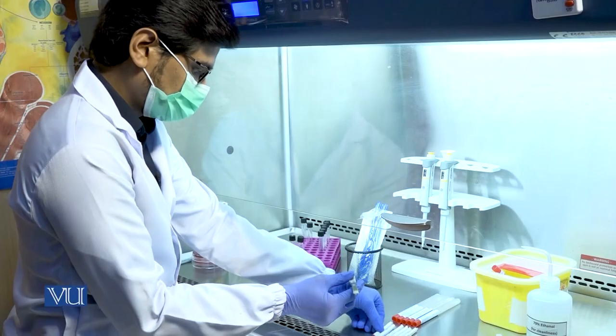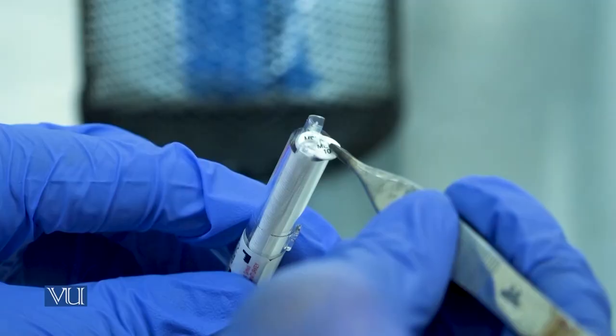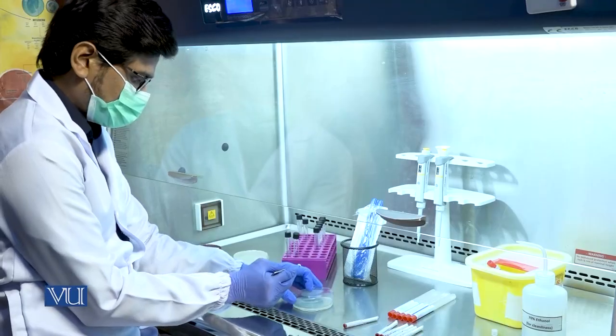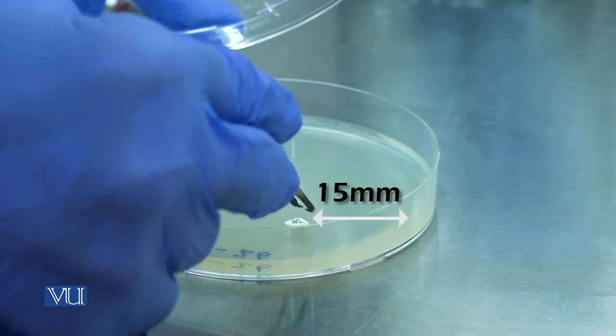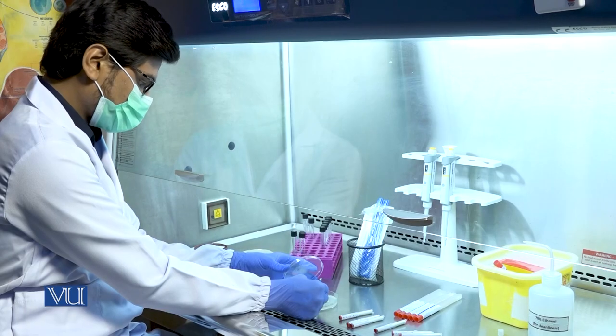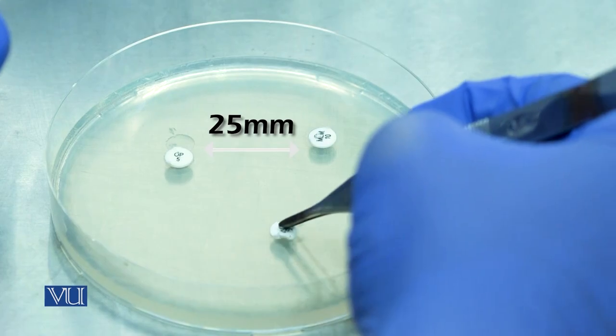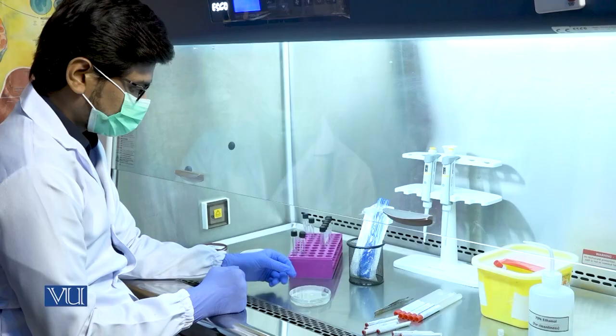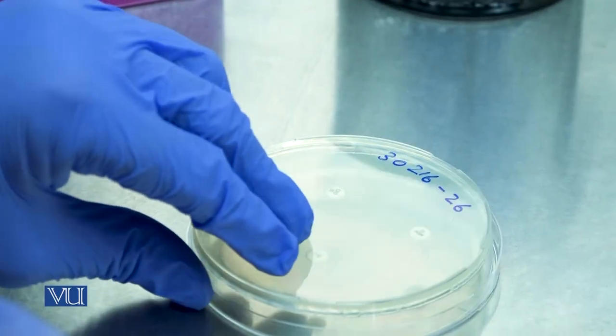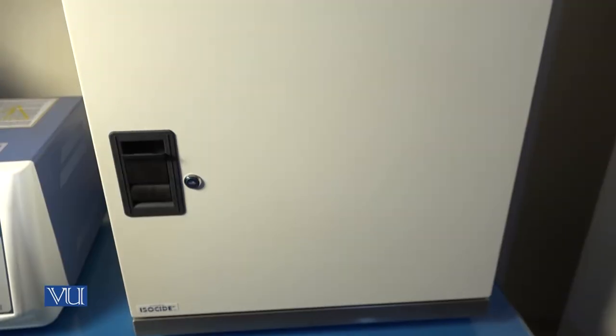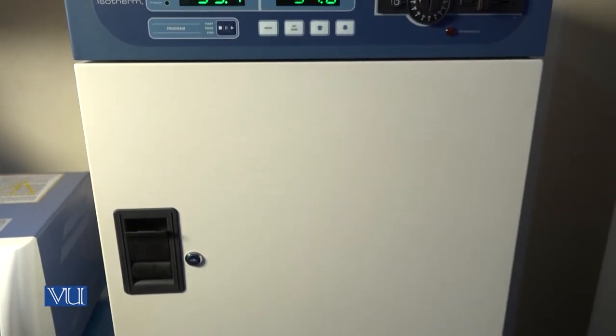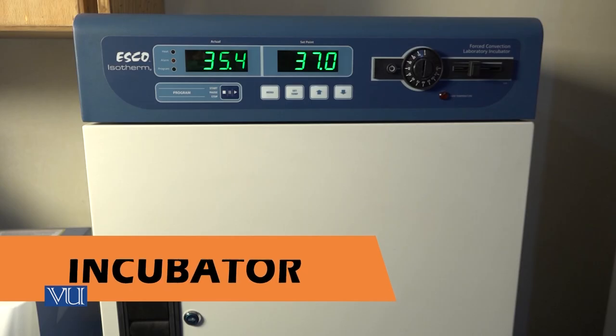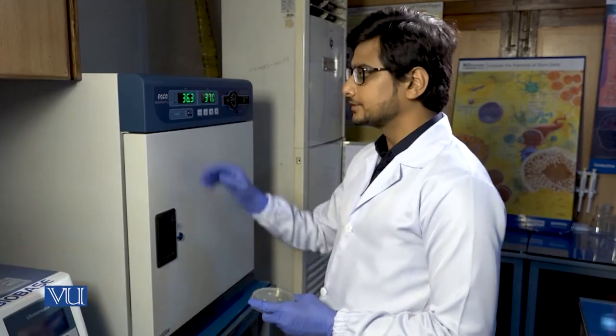Fourth step is, using sterile forceps, place the appropriate antimicrobial discs evenly distributed on the inoculated plate. Note the precautions: the discs should be almost 15 mm from the edge of the plate and no closer than about 25 mm from disc to disc. No more than six discs should be applied in a 90 mm disc. Each disc should be lightly pressed down to ensure its contact with the agar. It should not be moved once in place. Now we'll incubate the plate for 16 to 18 hours in incubator at 37 degrees centigrade.